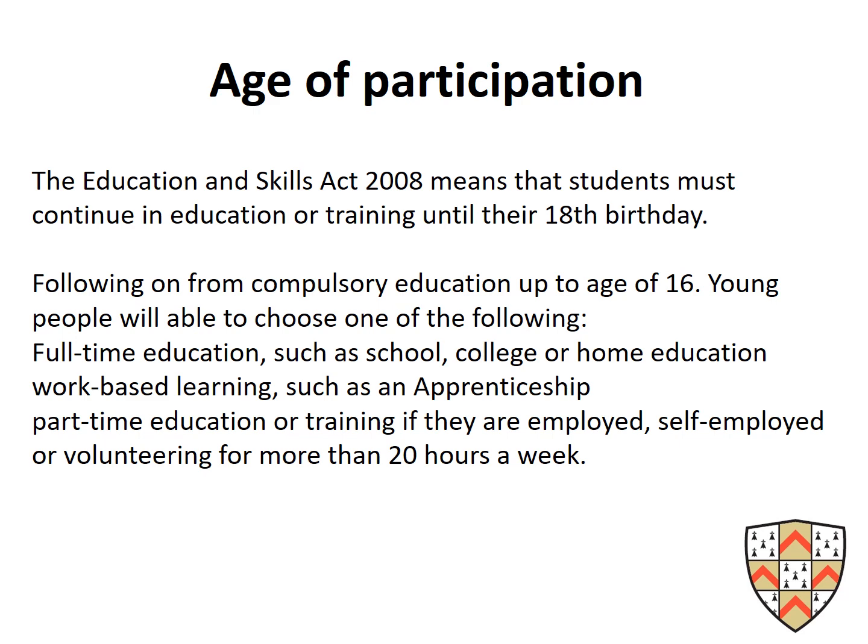Regarding age of participation: students must continue in education until their 18th birthday, though what that education looks like can be very different. They can stay in school for sixth form, do apprenticeships, part-time education or training, or volunteering with some educational aspect. If students do not pass Maths or English at grade 4 or above, they must continue resitting those until their 18th birthday.